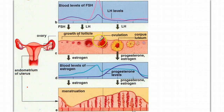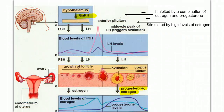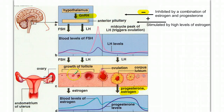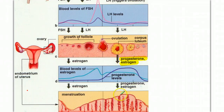After ovulation, the cells of the follicle become the corpus luteum. The corpus luteum secretes high levels of progesterone and estrogen. These high levels of estrogen and progesterone have an inhibitory effect on the pituitary-hypothalamus system, suppressing FSH and LH levels, ensuring that we do not mature a new follicle while this egg still has the possibility of being fertilized. The high levels of progesterone help maintain the thick endometrium wall.